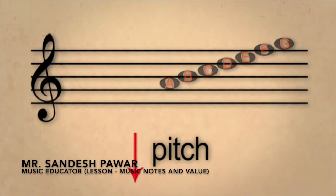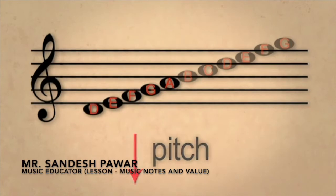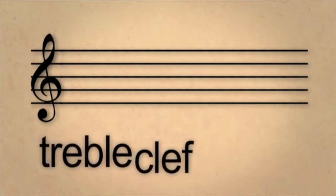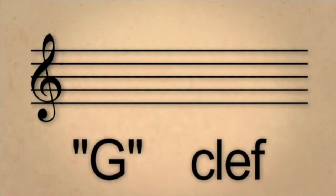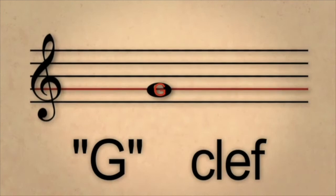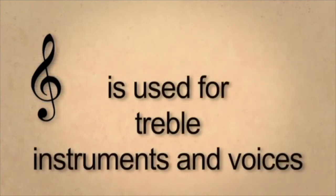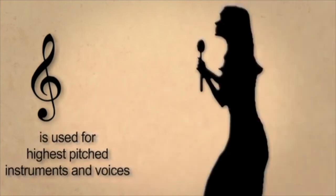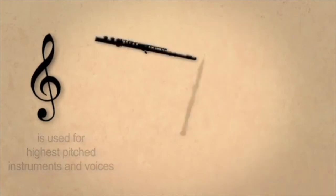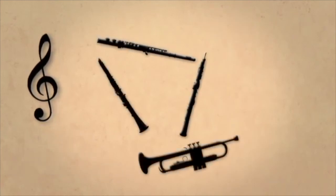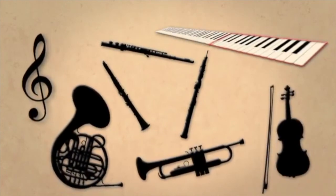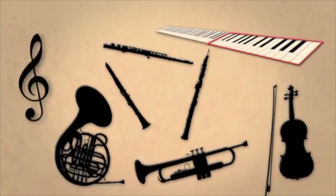As the notes ascend, the pitch becomes higher; when the notes descend, the pitch becomes lower. This is true of all traditional music notation. The treble clef is sometimes called a G clef because it circles the G on the second line. This clef is used for treble instruments and voices — the highest pitch instruments and voices — such as the soprano voice, and instruments like flute, clarinet, trumpet, horn, violin, and the upper part of the piano often played with the right hand. Hope you enjoy this lesson, thank you.